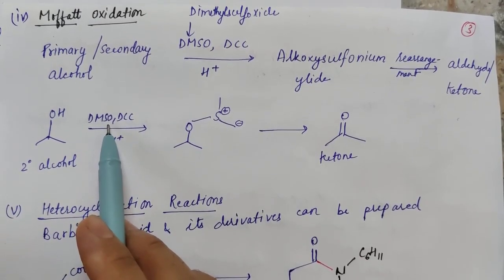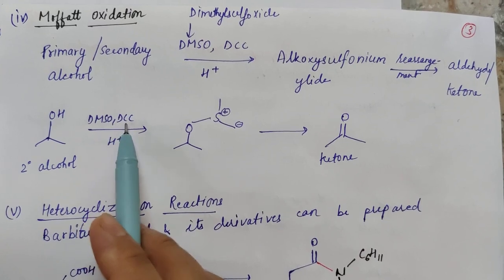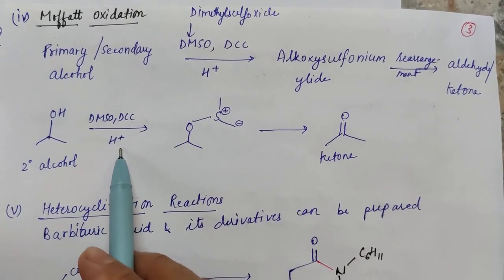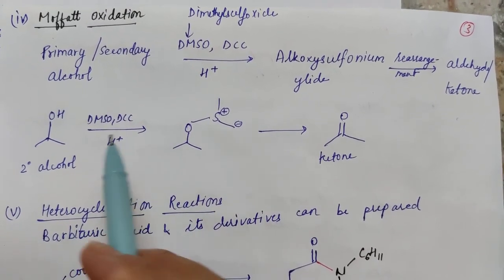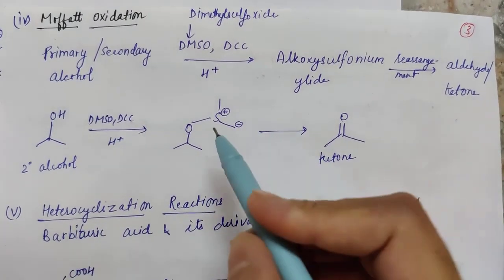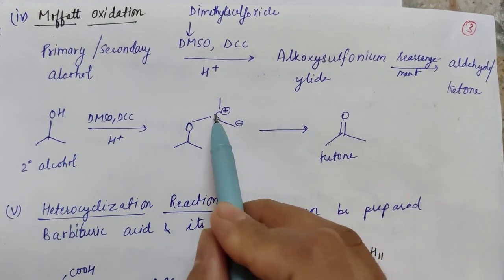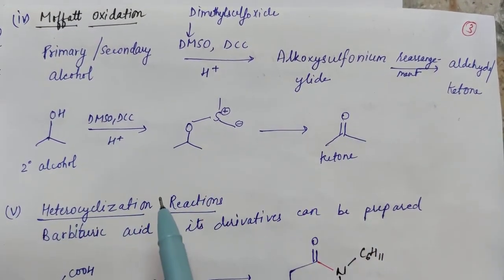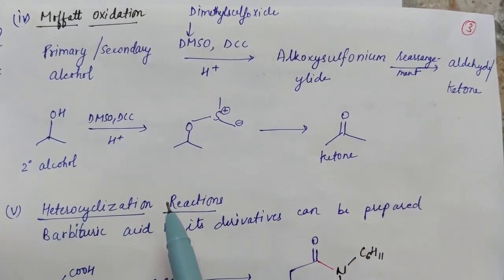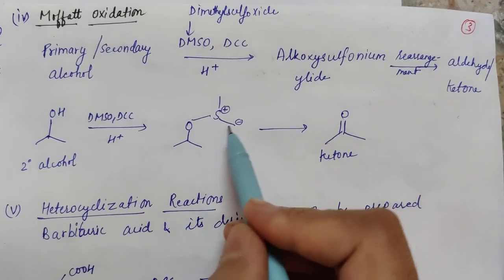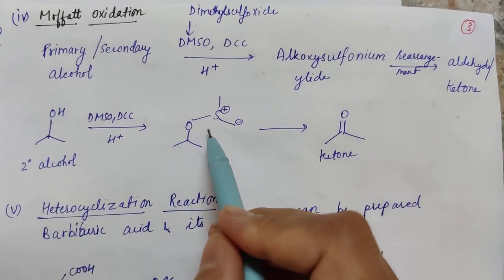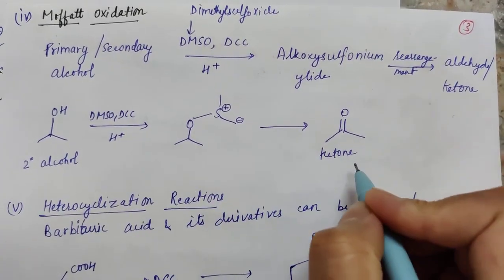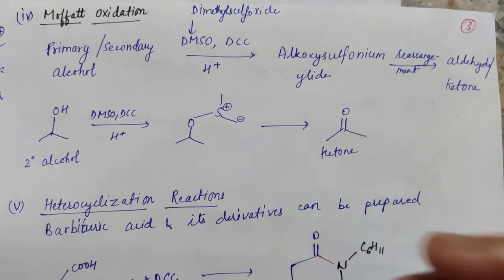For example, a secondary alcohol with dimethyl sulfoxide, DCC, and acidic conditions undergoes a rearrangement reaction to give ketone formation.